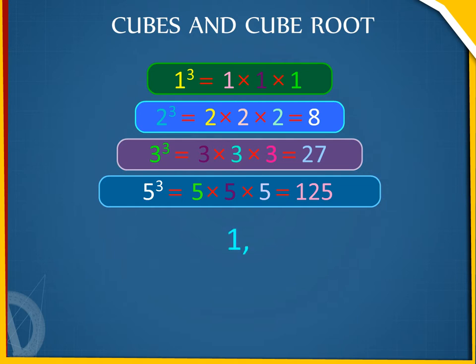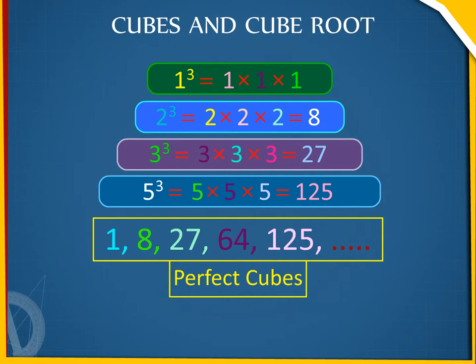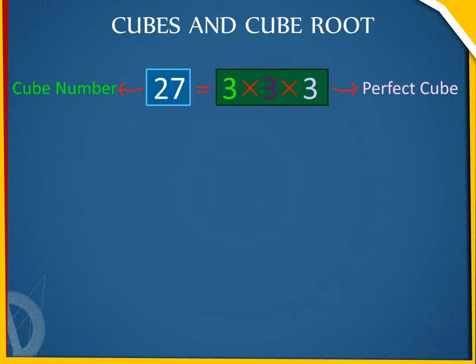The numbers 1, 8, 27, 64, 125 are called perfect cubes. When the three factors of a product are the same, the product is called a cube number or a perfect cube.